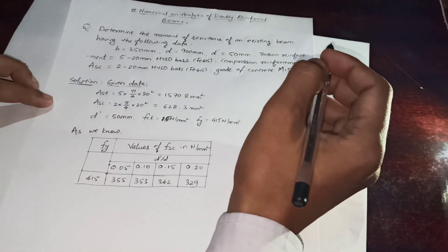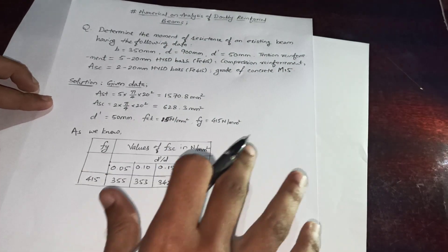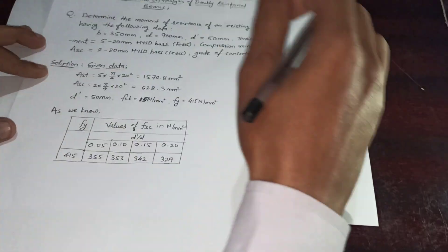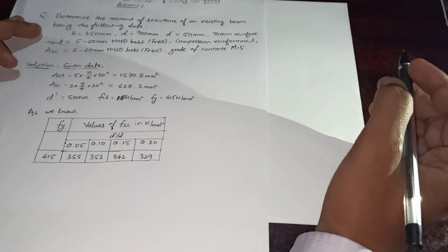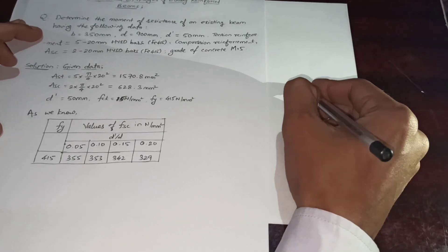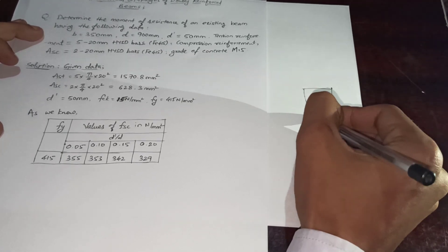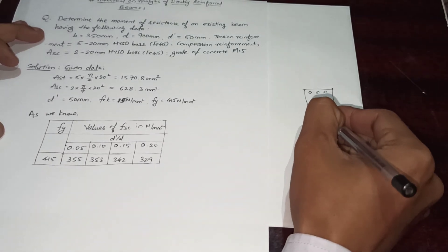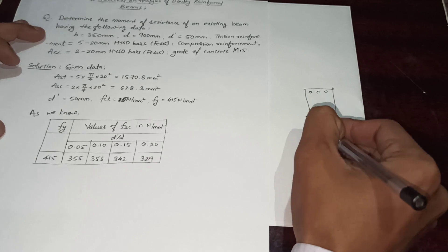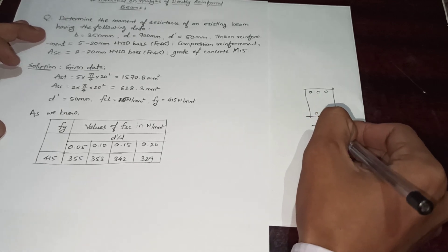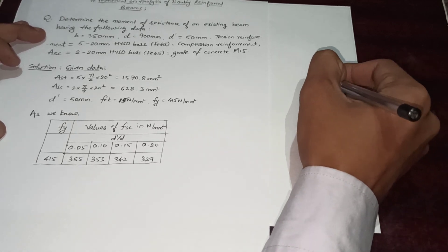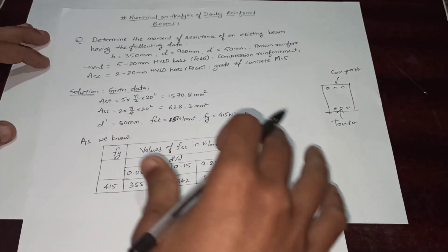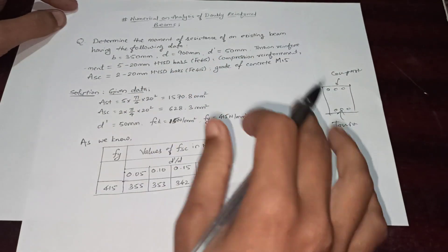Hi friends, today we are going to learn how to solve a numerical on analysis of a double reinforced section or double reinforced beam. First of all, what is meant by a double reinforced beam? A double reinforced beam is a beam in which reinforcement is provided on both zones — that is, on the tension side as well as on the compression side. The bottom is the tension side and the top is the compression side.